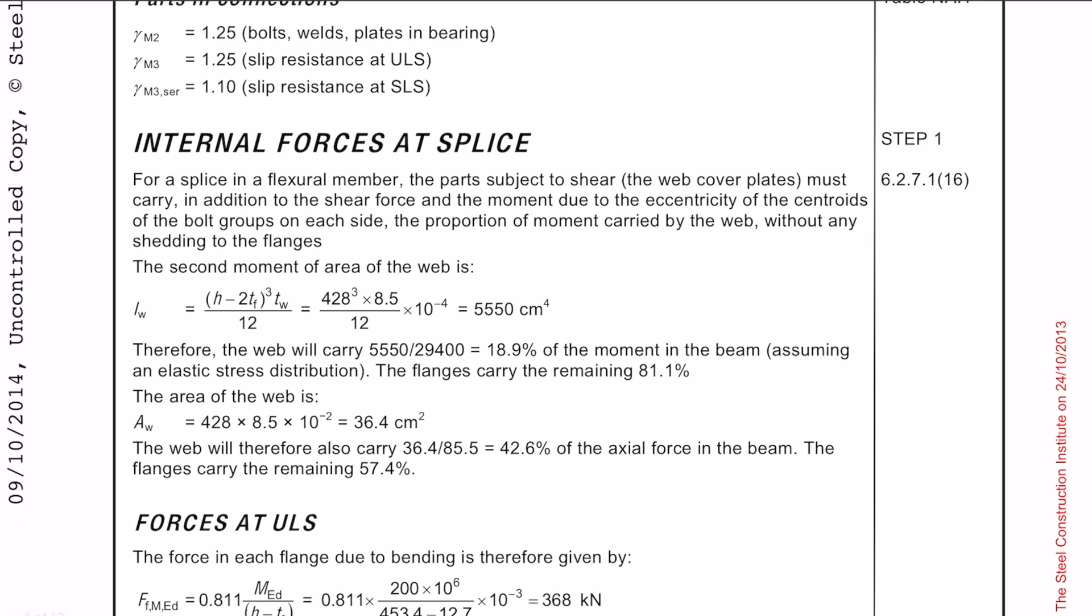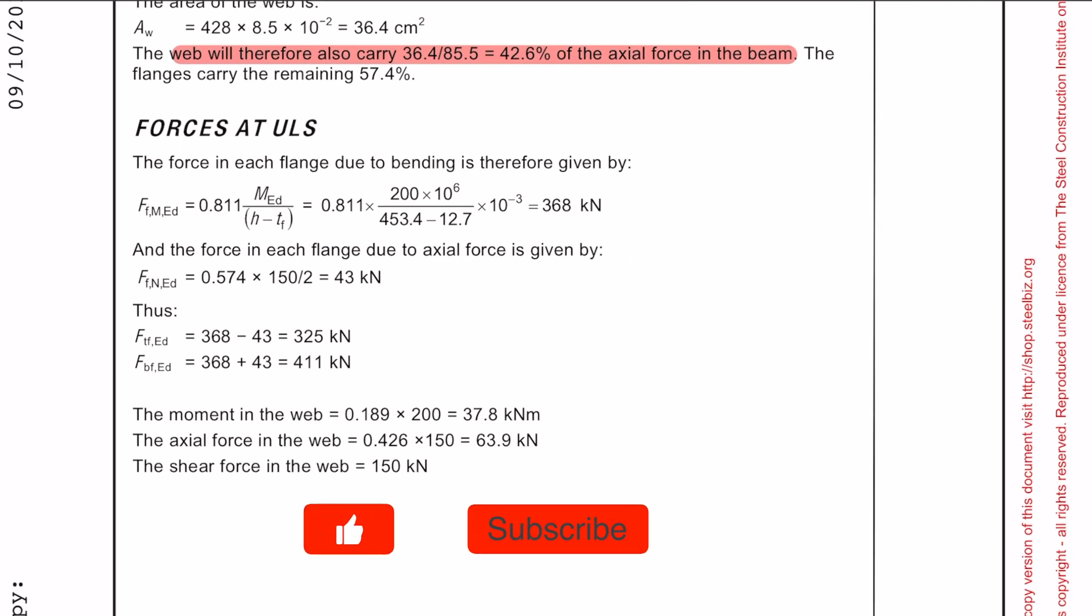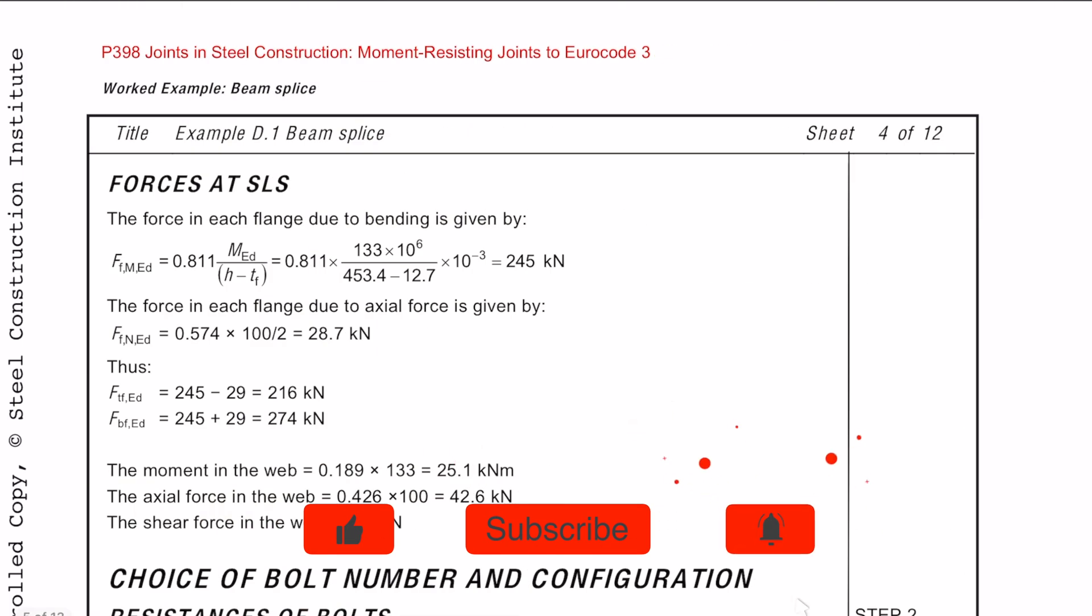Okay so this next step is to work out the internal forces at the splice connection. We need to work out which proportion of the moment is carried in the web and which proportion is carried in the flange. And also likewise which proportion of the axial force is carried in the flange and in the web. You can then work out the forces in the flange due to bending using these equations. And you need to do the same with the axial force. Then you can work out the forces in the web and then you need to repeat the process for the forces at SLS.